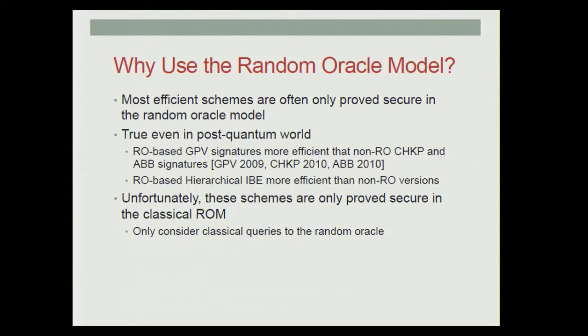For example, the random oracle-based signature scheme of GPV from 2009 is more efficient than the non-random oracle CHKP and ABB signatures.